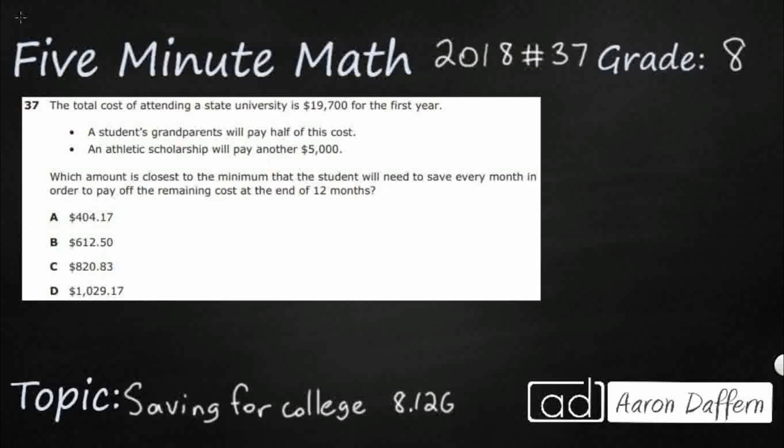So we have the total cost of attending state university here. It's going to be $19,700 for one year. So the grandparents are going to pay half the cost, we have an athletic scholarship for $5,000, and then we need to save money for the remaining cost and we are going to do it over 12 months.